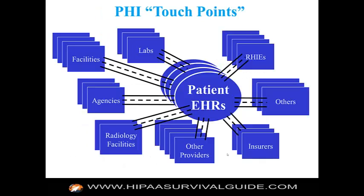Where are you going to look for business associates? One place is all the touch points related to a patient's EHR and all the touch points where you send and receive PHI. Some will be excluded because they're providers exchanging PHI for treatment purposes; others will be included because you're exchanging PHI for billing services, storage, backup, etc. There are a lot more business associates than you are probably aware of.